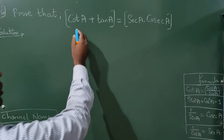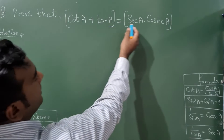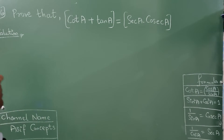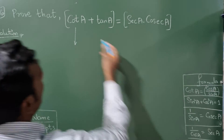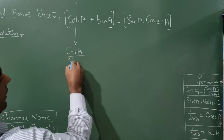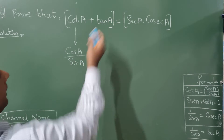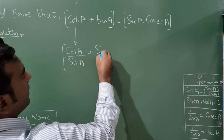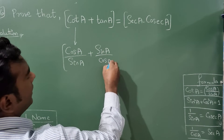Prove that cot A plus tan A is equal to sec A into cosec A. Now, cot A is cos A divided by sin A, plus tan A, which is the reverse: sin A divided by cos A.